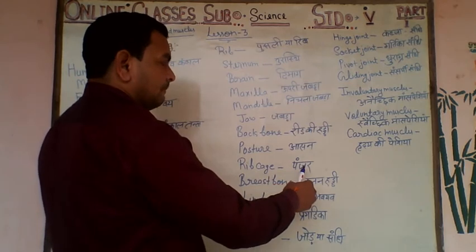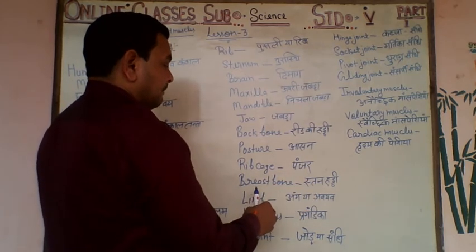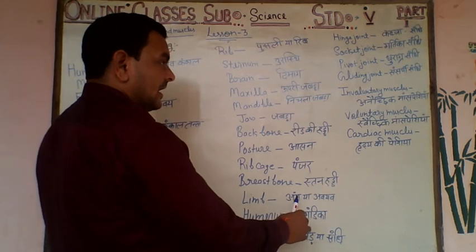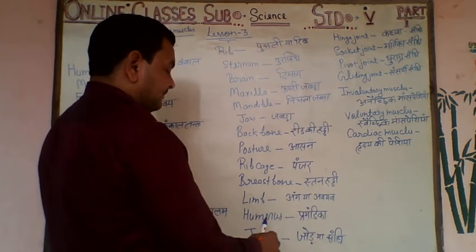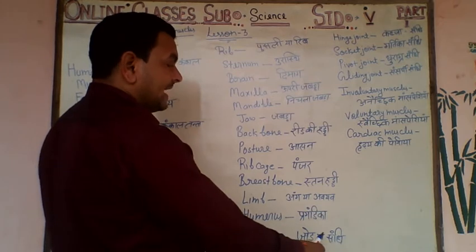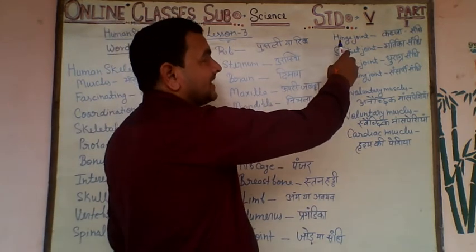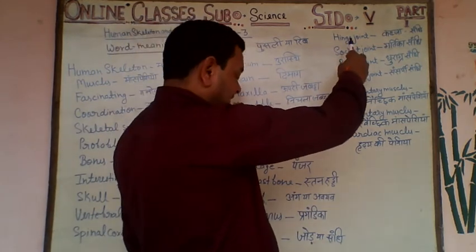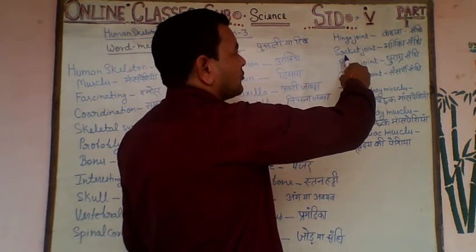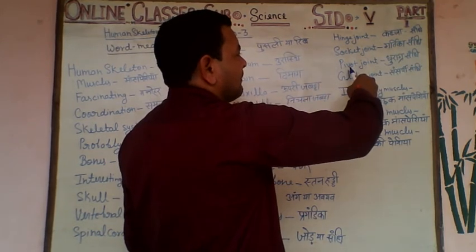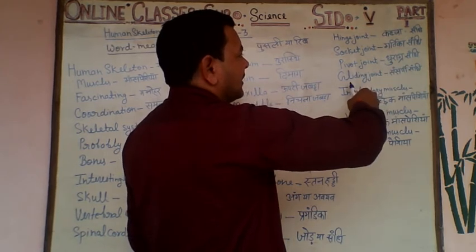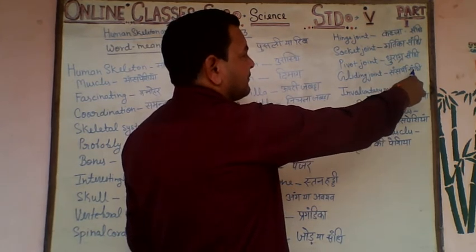Rib is Kail, Panjar. Breast bone is Astan ki Haddi. Limb is Angiya Avyo. Armrest is Pragandika. Joint is Zodhya Sandh, Thirata Sandhya. Hinge joint is Kabja Sandh. Socket joint is Gartika Sandh. Pivot joint is Dhurapra Sandh. Gliding joint is Sarpi Sandh.